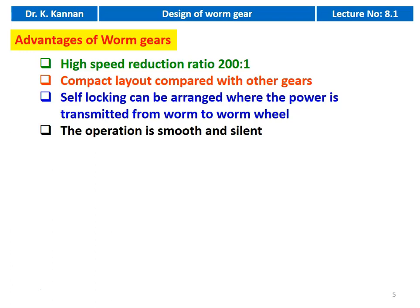Advantages of worm gear: high speed reduction is possible — 200:1 is possible. Compact layout compared with other gears; the overall size of the gearbox will be very small in the case of a worm gear drive. Self-locking can be arranged where power is transmitted from the worm to the worm wheel — meaning it is driving one way and we cannot reverse the power transmission as in other drives. The operation is smooth and silent.